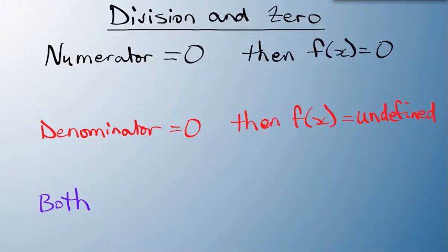But if both the numerator and denominator are zero at the same time, if they both equal zero, then what we have, x is indeterminate.